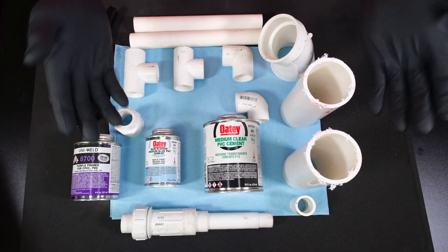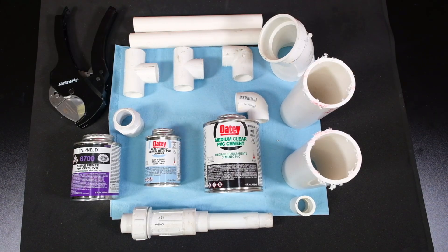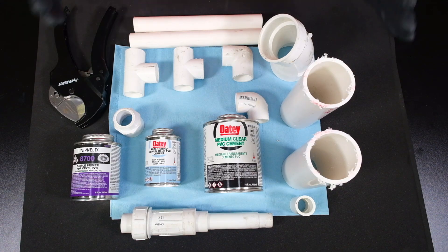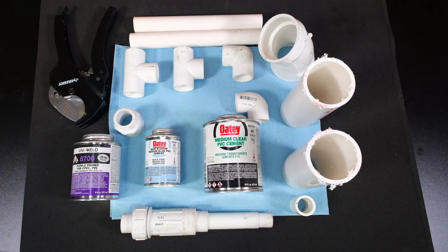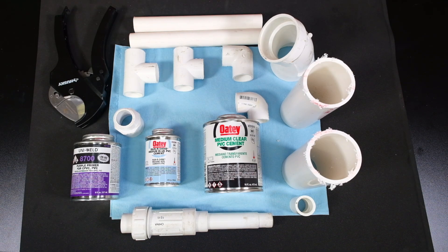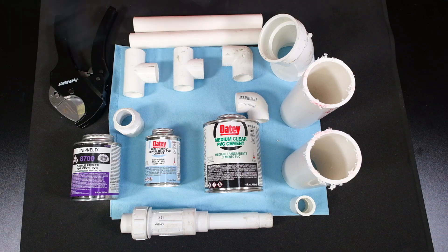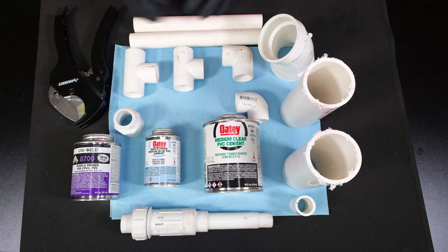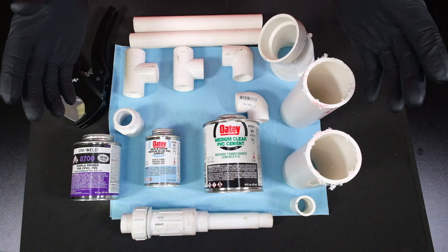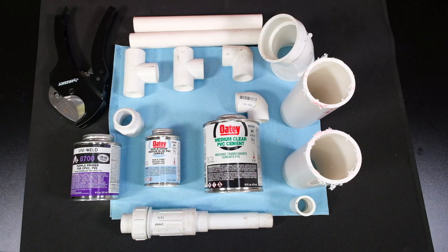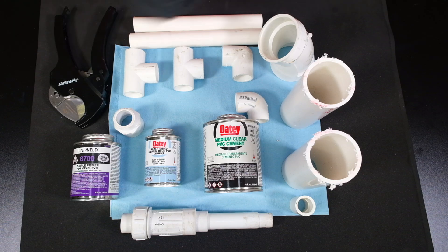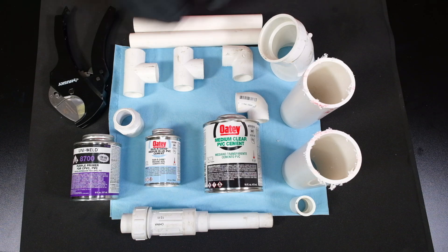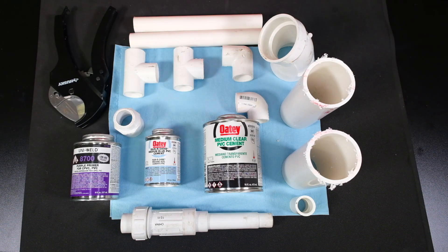Here we have PVC fittings and PVC solvent weld cement. We've had other videos that talk about CPVC and PVC. This is PVC, polyvinyl chloride, whereas CPVC is chlorinated polyvinyl chloride. PVC is not rated for hot water. CPVC is rated for hot water. CPVC is a more tan gold with gold stripe on it, and as you notice PVC is white pipe.